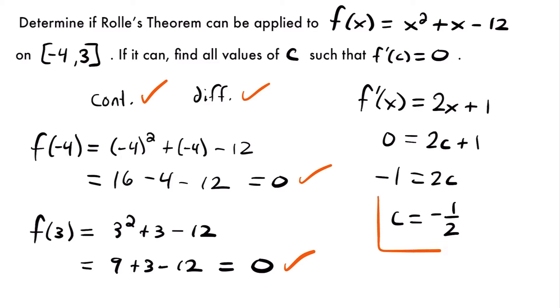To solve for c, we set 0 = 2c + 1. Subtracting 1 from both sides gives -1 = 2c, and dividing by 2 gives c = -1/2. That's the final answer: Rolle's theorem applies and the value of c where the derivative is 0 is c = -1/2.